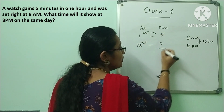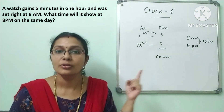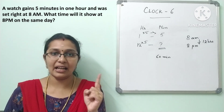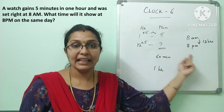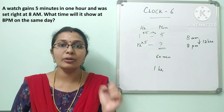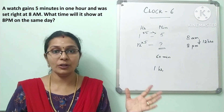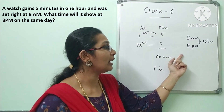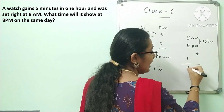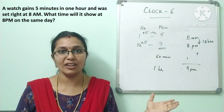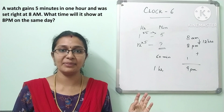Here, 60 minutes gain in total — that is 1 hour extra gain. So actually at 8 pm, there is 60 minutes total gain, which is 1 hour. Plus 1 hour means the watch will show 9 pm. It is very easy — the answer is 9 pm.